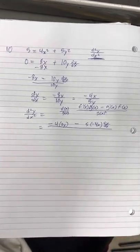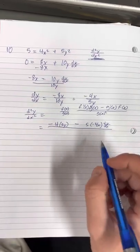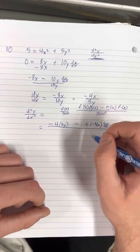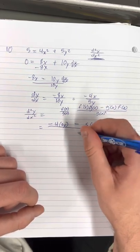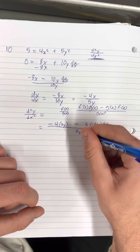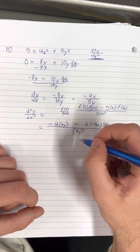This can be written over g(x) squared. Since g(x) was 5y, it's going to be 5y squared, written like that.